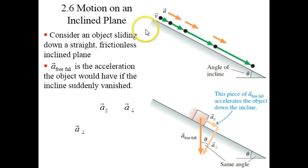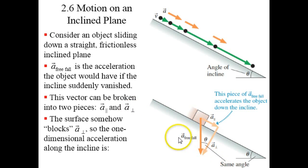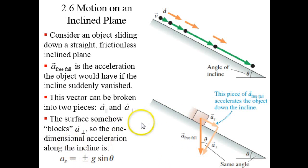If there were no incline, the object would fall downwards with free fall acceleration of 9.8. But you can break this vector into two components: a-parallel and a-perpendicular. It has some component going down the incline and some component going into the incline. The surface blocks the perpendicular component, so the actual acceleration of the object is only the parallel component, which turns out to be g times sine theta. If positive is defined as down the incline, the acceleration is positive g sine theta.